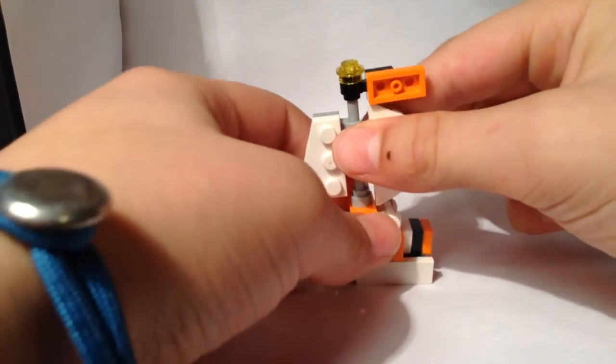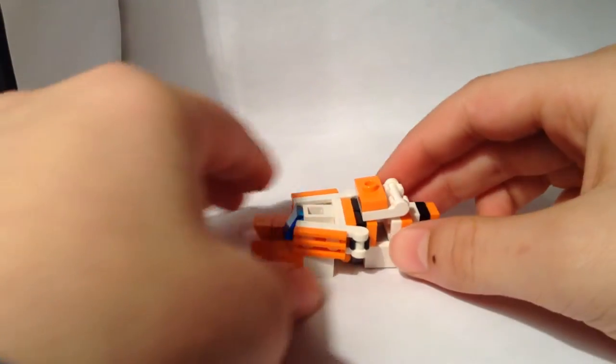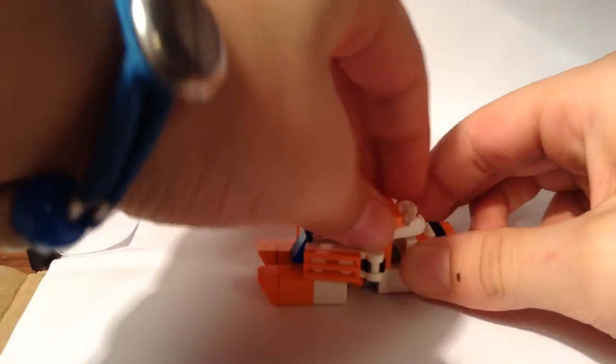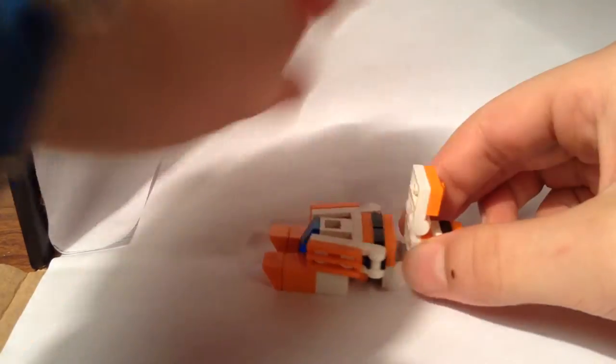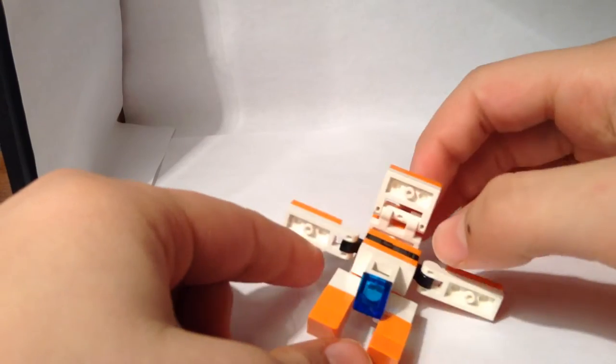First thing you want to do, take off this sail, set it off to the side, lift up this bit, lift out these, like so.